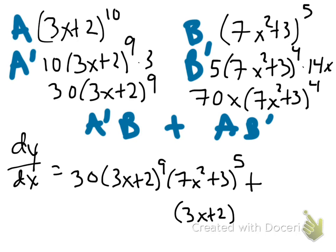which is 3x plus 2 to the 10th, times B prime, which is 70x, 7x squared plus 3, all raised to the 4th, and that's it.